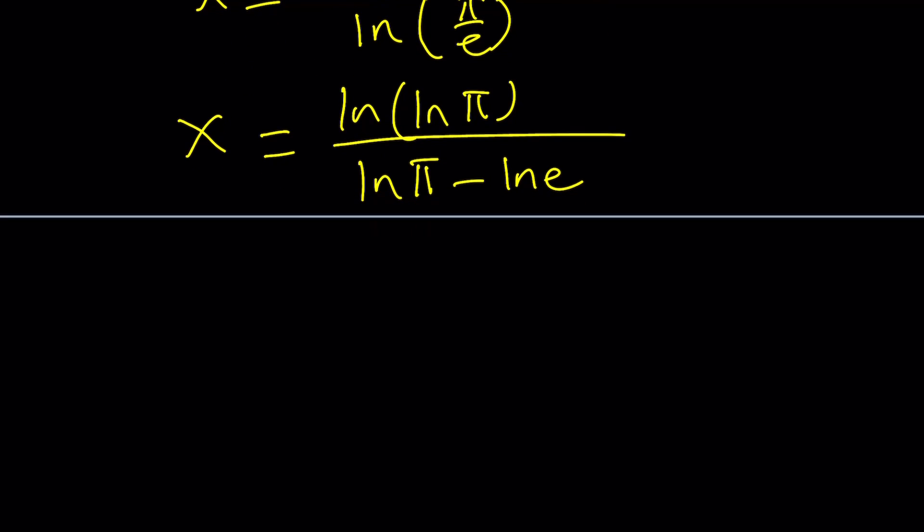And as you know, ln e is 1, right? We just talked about it. So we can actually write x as ln ln π divided by ln π minus 1.